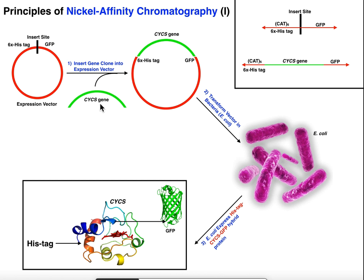We're going to use the cytochrome c gene — the CYCS gene — shown here as a DNA segment in green. I also need what's called an expression vector. These are circular plasmids typically found in bacteria that can force a cell to express a certain protein. The plasmid has an insert site where I'll insert the cytochrome c gene, and on the left of the insert site I can place the 6x histag, which adds it to the N-terminal side of the protein.